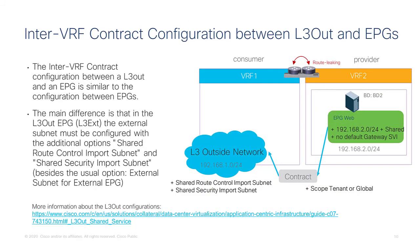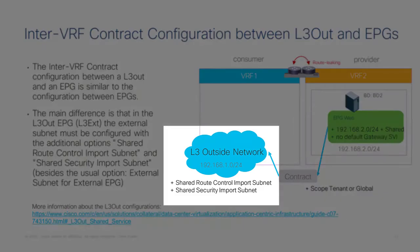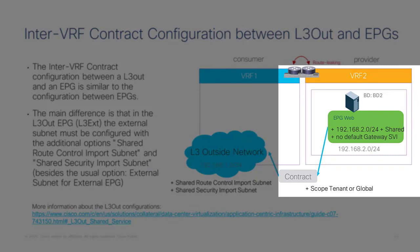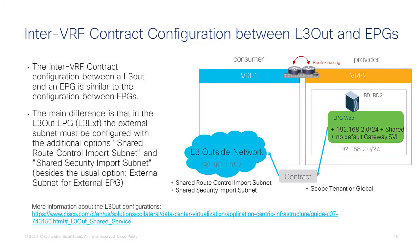For layer 3-out to EPG configurations, compared to a regular layer 3-out to EPG setup, the main inter-VRF difference is that under the layer 3 external configuration you need to set the flags 'shared route control import subnet' and 'shared security import subnet.' Otherwise, the other configurations are the same as for inter-VRF contracts: the scope must be tenant or global, and the provider-side EPG must be configured with a subnet and the shared and no default gateway SVI options.